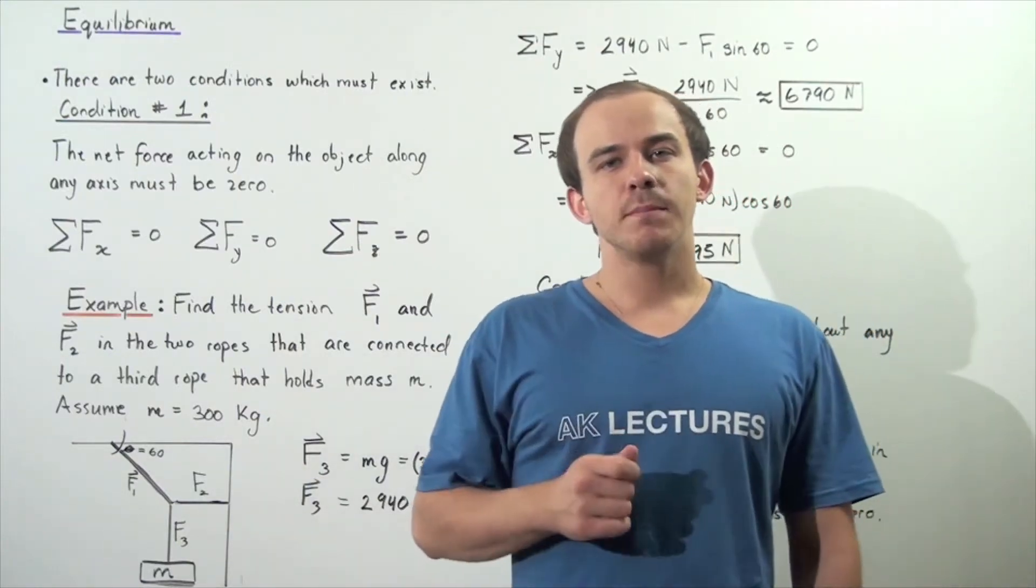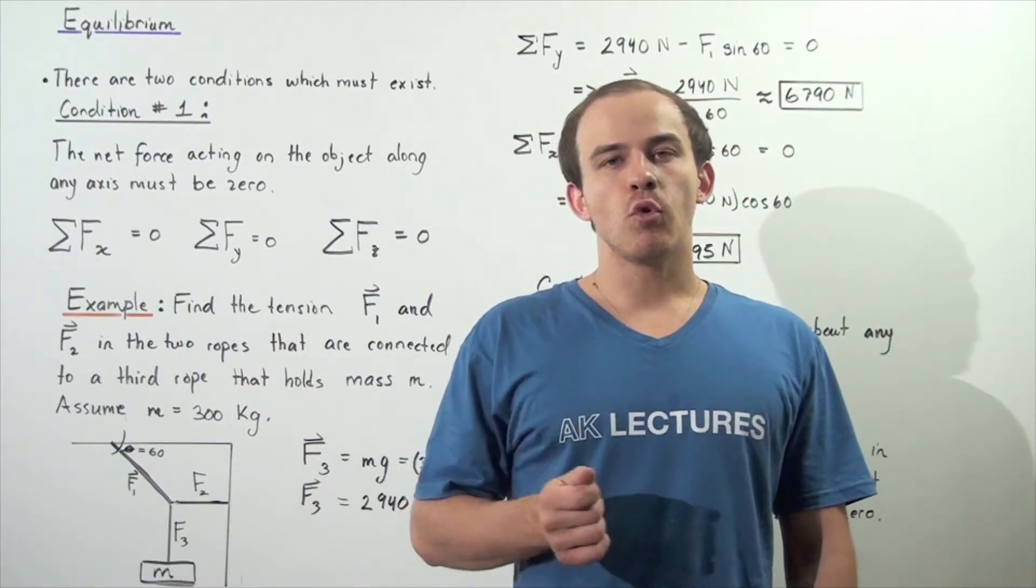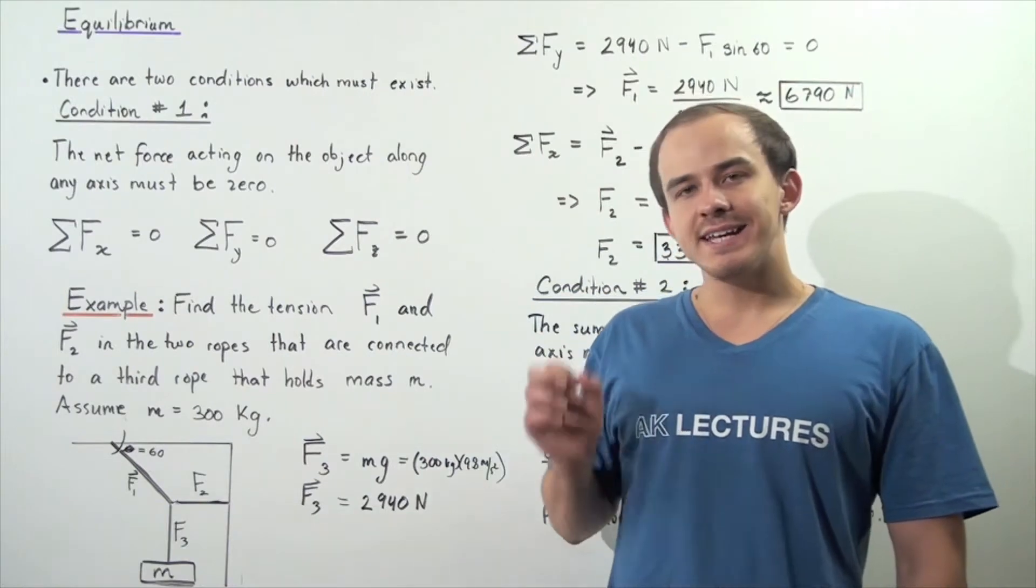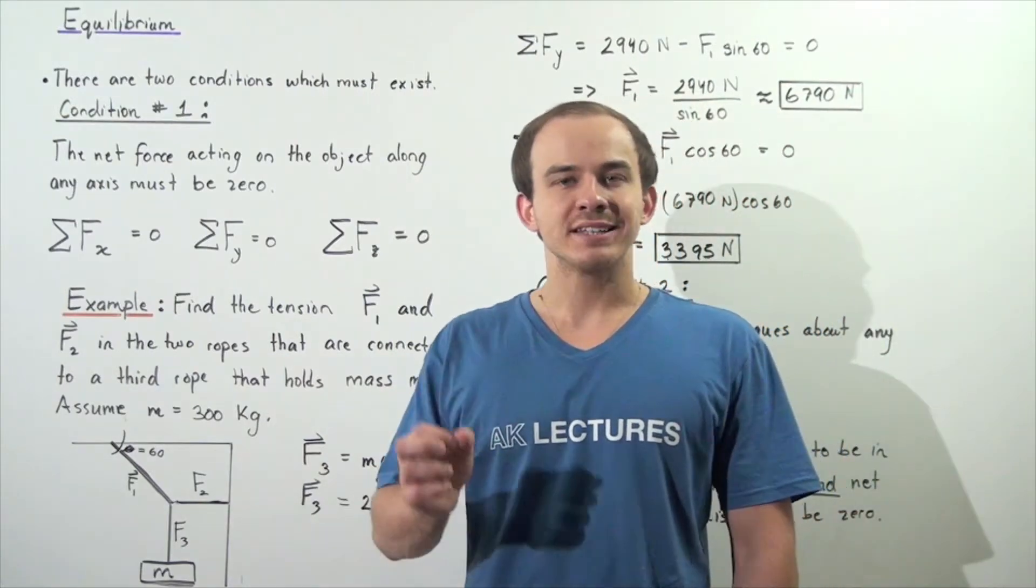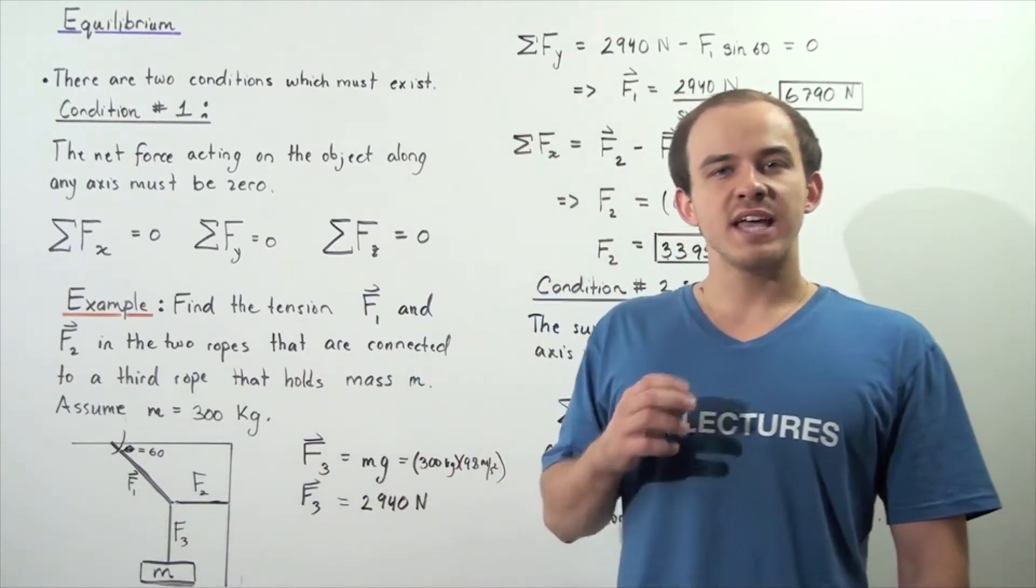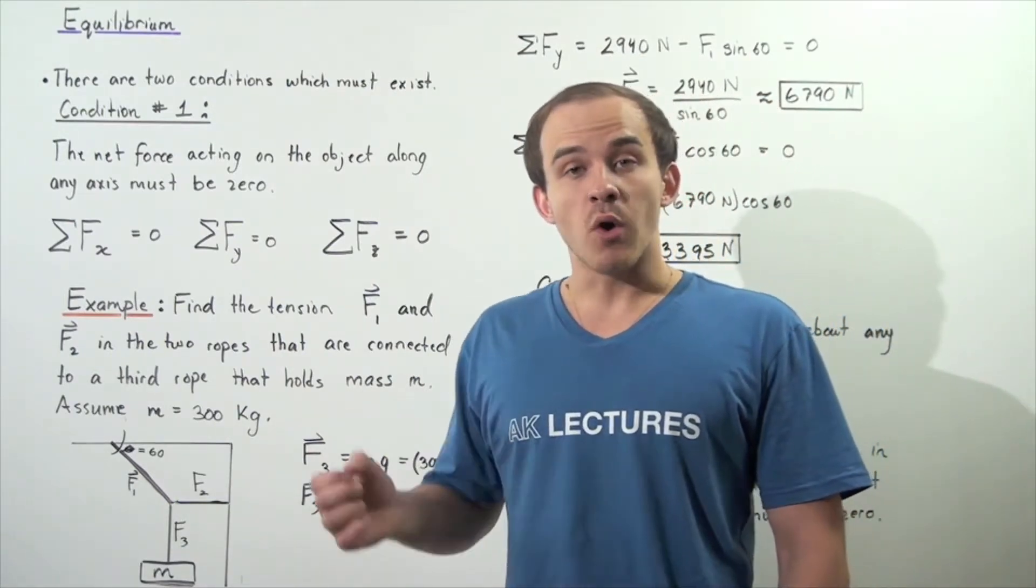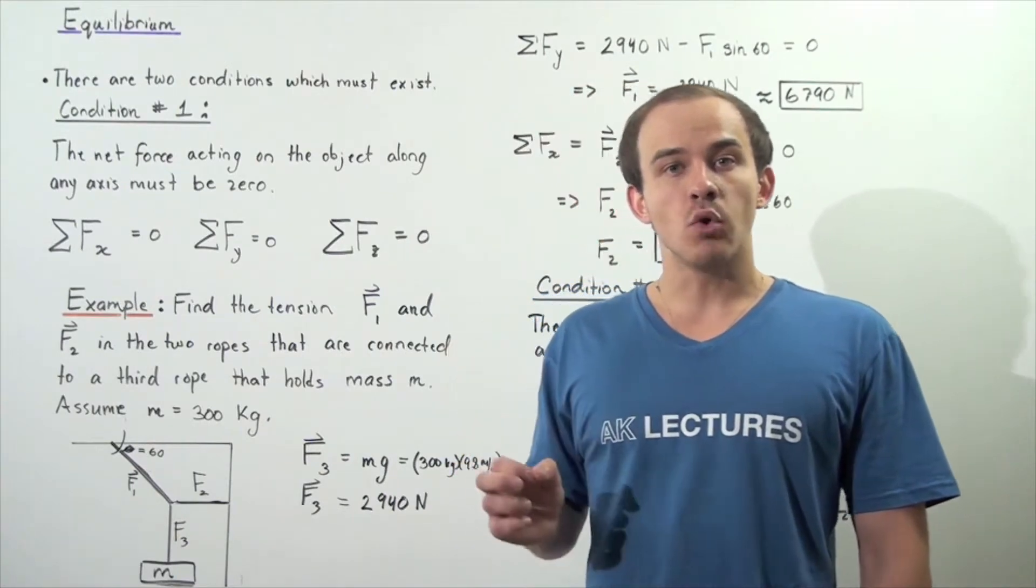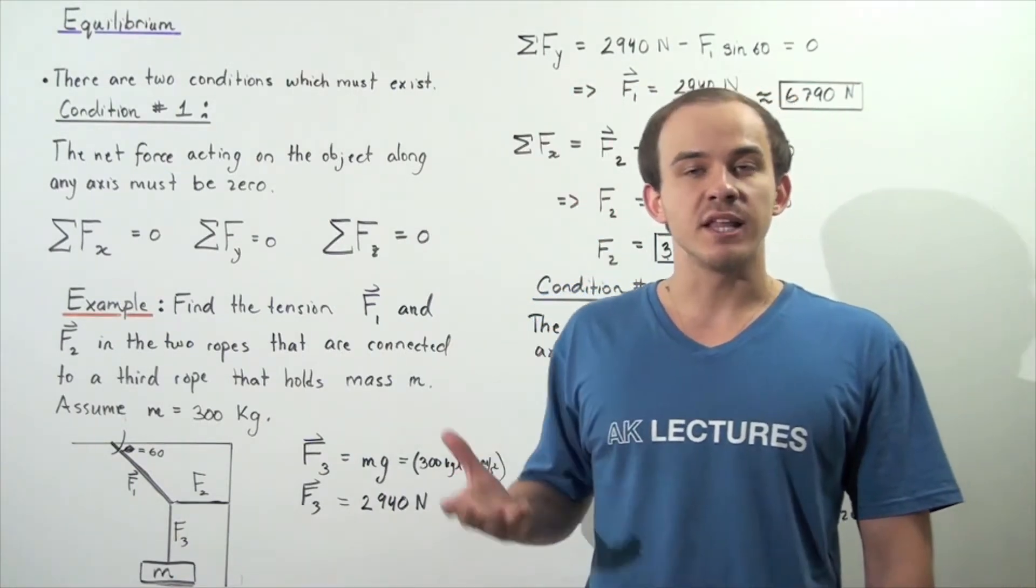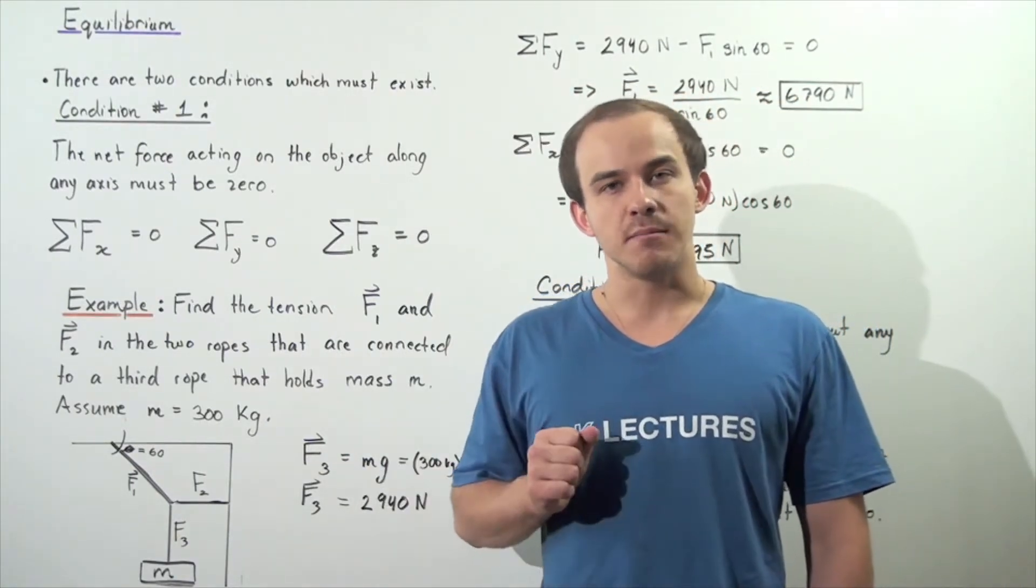Up to this point, we spoke about torques and forces. We said that a net torque is required to act on an object to rotate that object about some axis, and a net force is required to act on that object in order for our object to translate, to move along some axis.